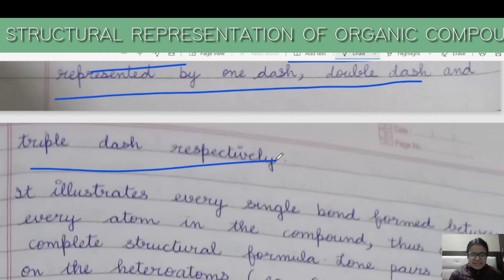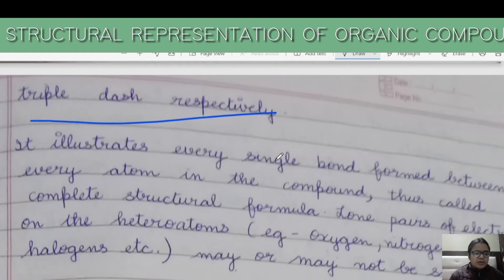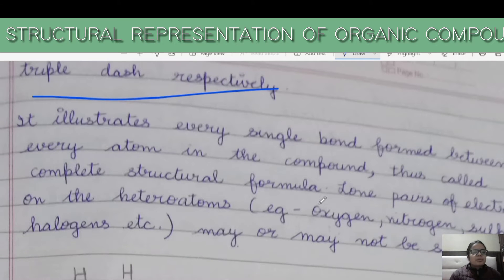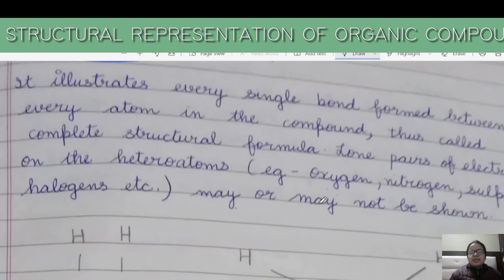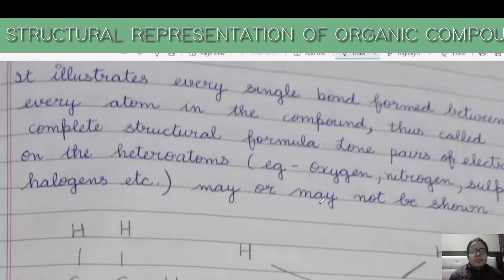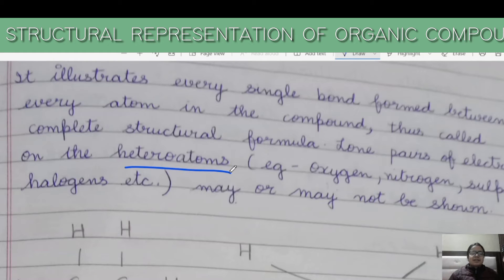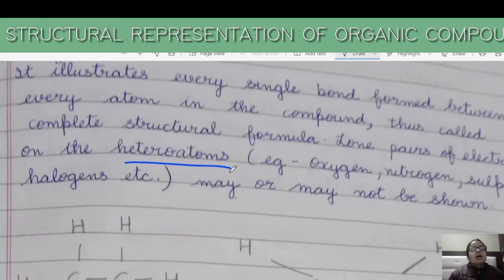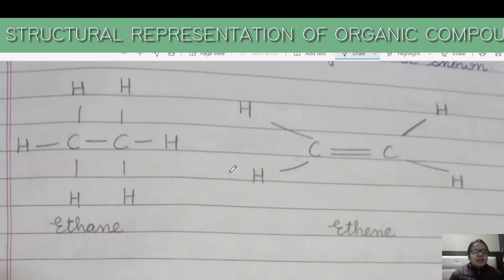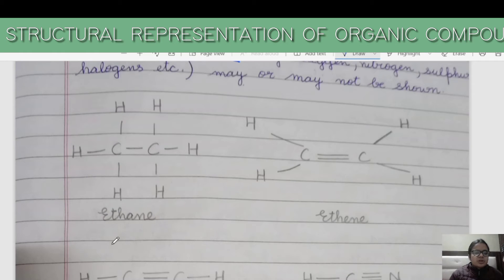If it is a single bond, it is a single dash; a double bond is a double dash; and a triple bond is a triple dash. It illustrates every single bond formed between every atom in the compound — thus called complete structural formula. Lone pairs of electrons on the heteroatom may or may not be shown. So in the complete structural formula, everything is shown.